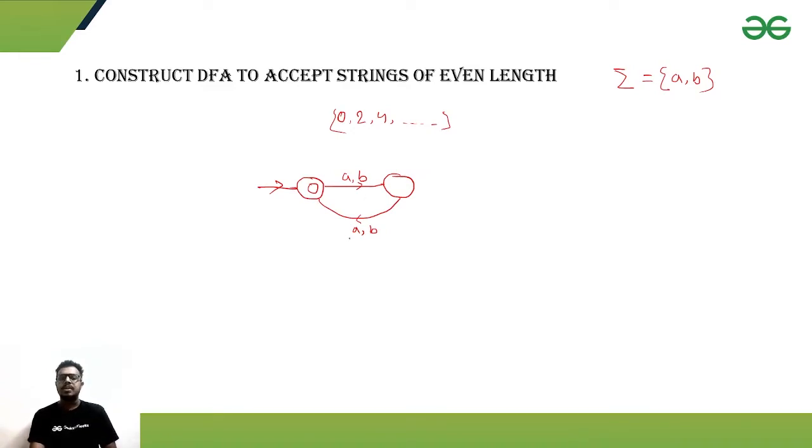If you are getting another symbol, that is making the whole string even, so it will come back to the accepting state. So this is a DFA where the even length strings are being accepted.